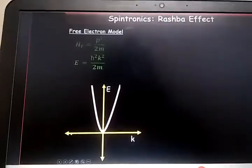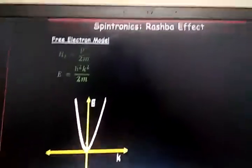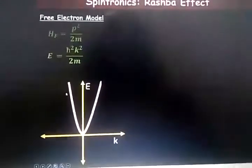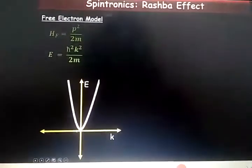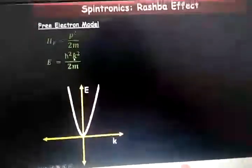Now if you plot the energy as a function of k, it looks like a parabola, a simple parabola. At k equal to 0, the energy goes to 0.